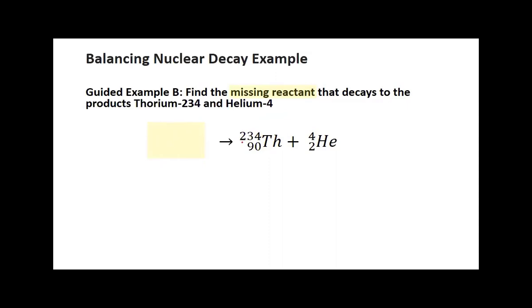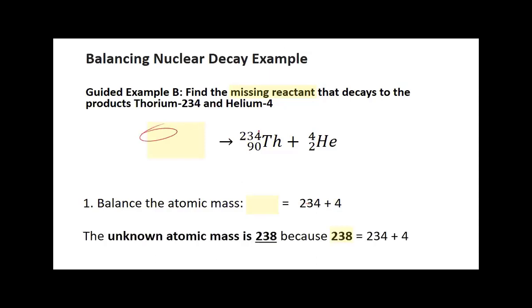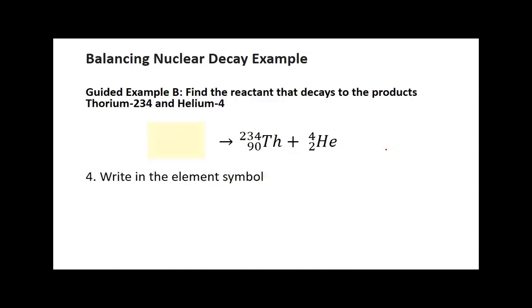So what number should be up top? It's a combination of the 234 plus 4. What number is going to be right here? 238. Perfect. So go ahead and put 238 in. And then take a look at the atomic number. It's going to be 92. Now look on the periodic table. What goes with 92? What's the only element that will have an atomic number of 92? It's going to be uranium.